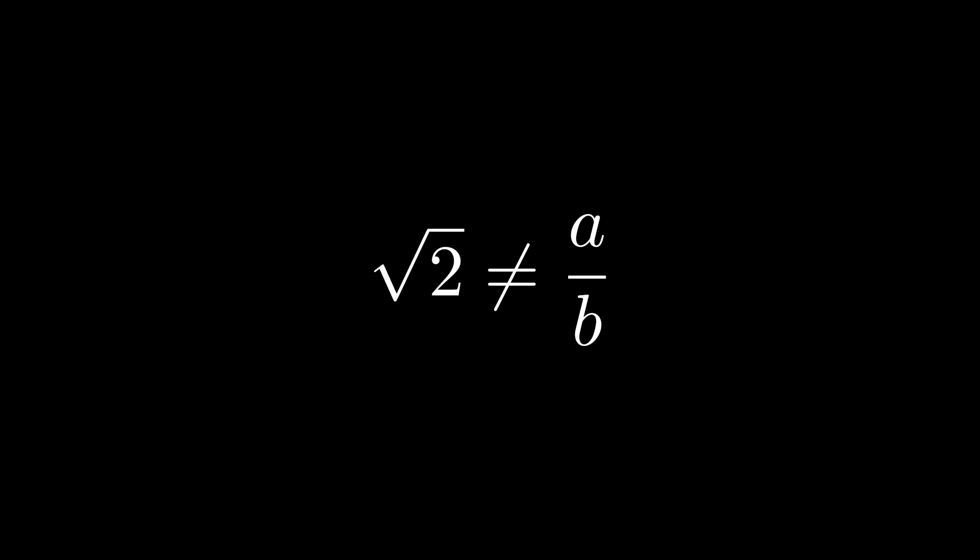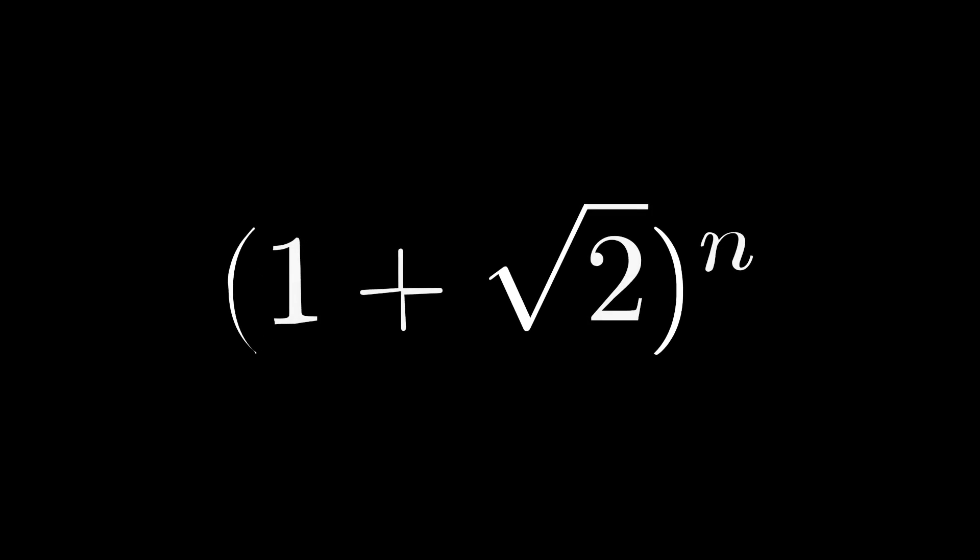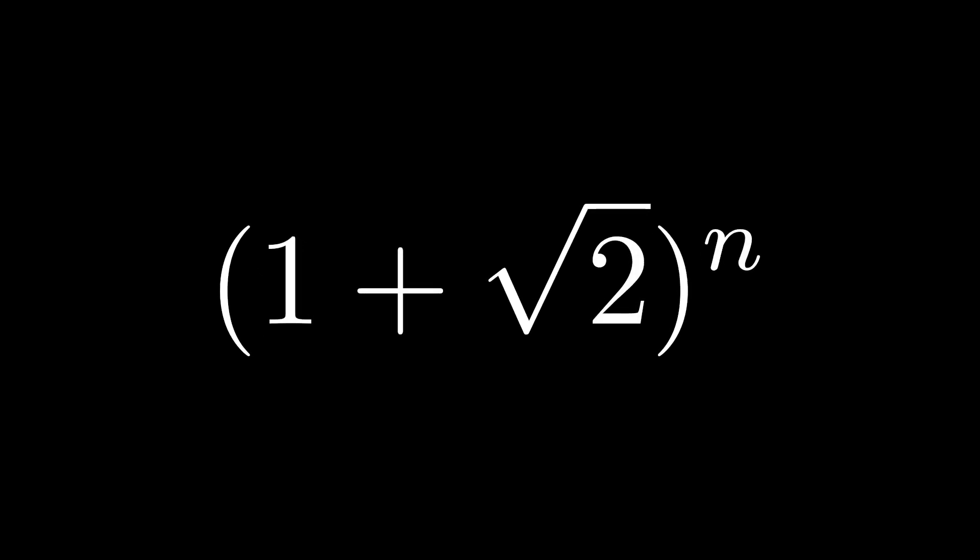So the first step to approximating the square root of 2 is to let it do the work for us. We're going to use a related number, 1 plus the square root of 2, and we'll keep squaring it to get higher and higher powers. And then hopefully we will spot a pretty interesting phenomenon.